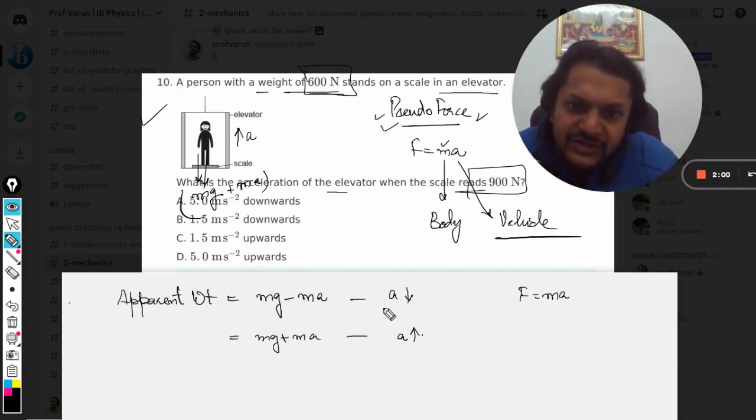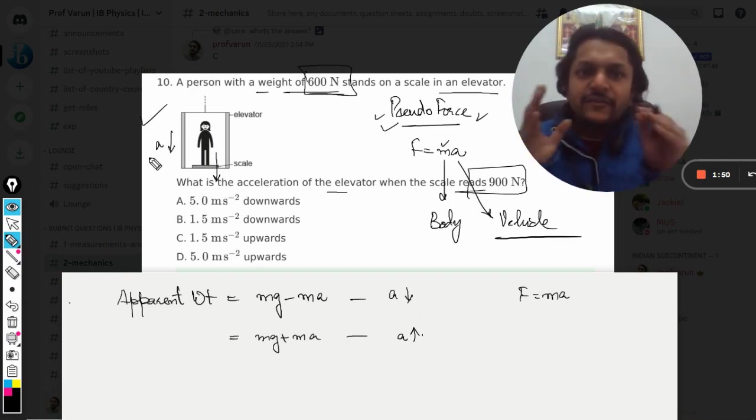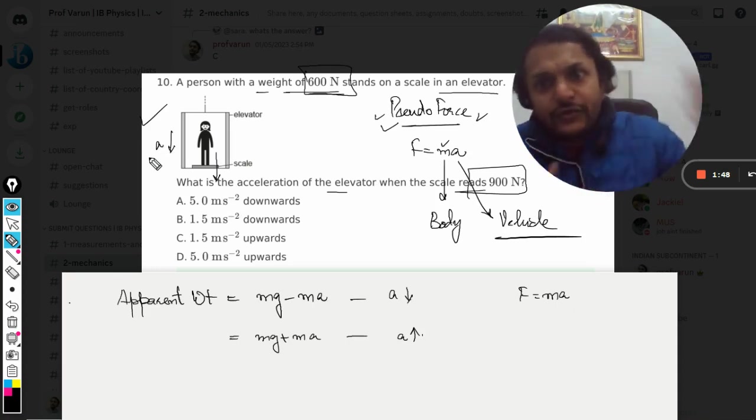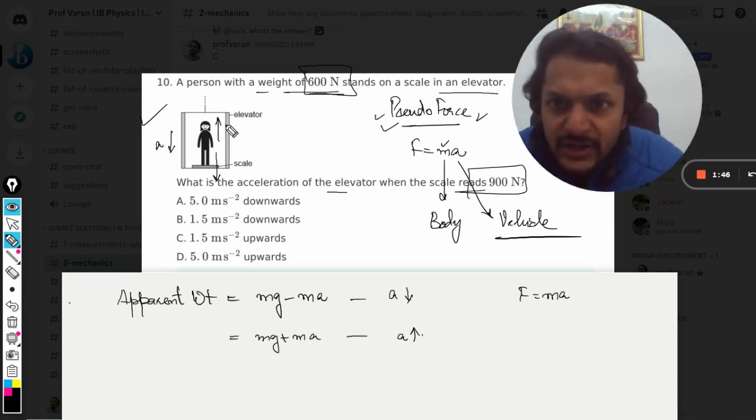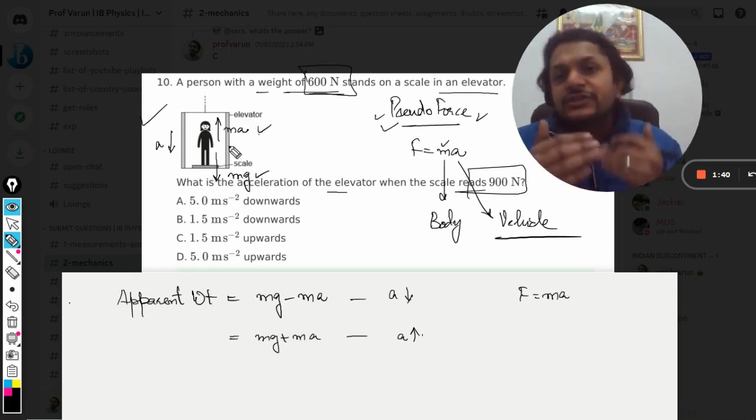And mg minus ma if acceleration is downwards. You see, the weight is anyways acting downwards, but if the acceleration for the vehicle is downwards, this pseudo force goes upwards. So this force will be m into a, so obviously our new reading will be mg minus ma because ma is the force that is acting upward.